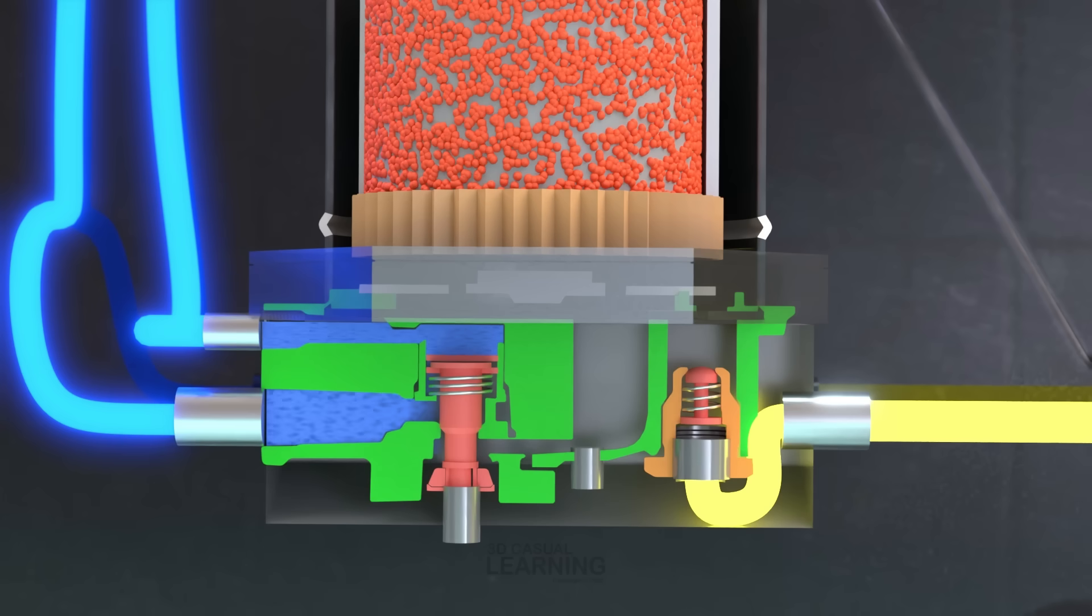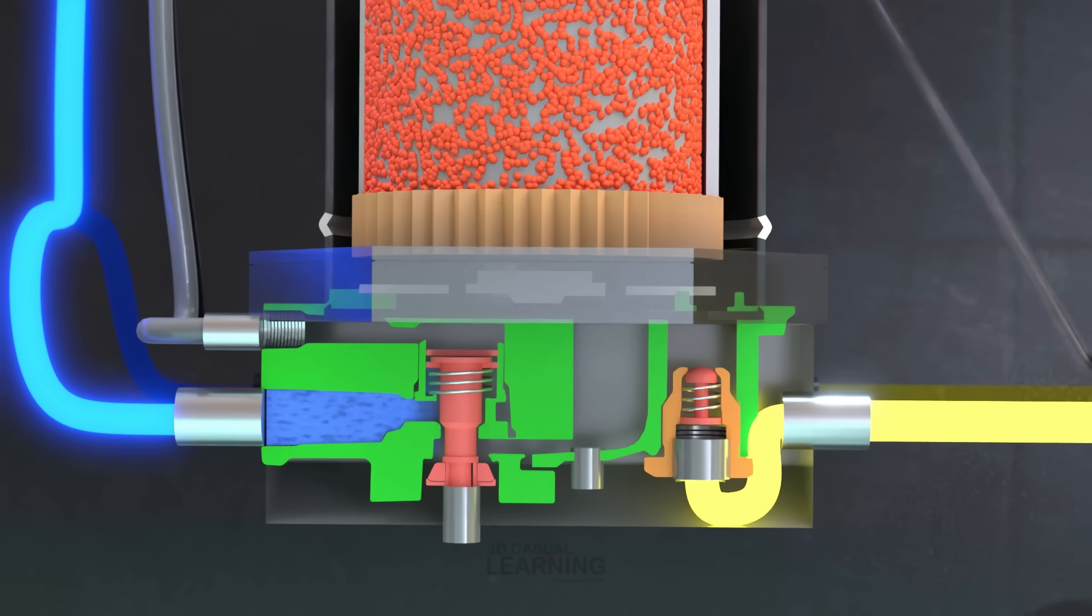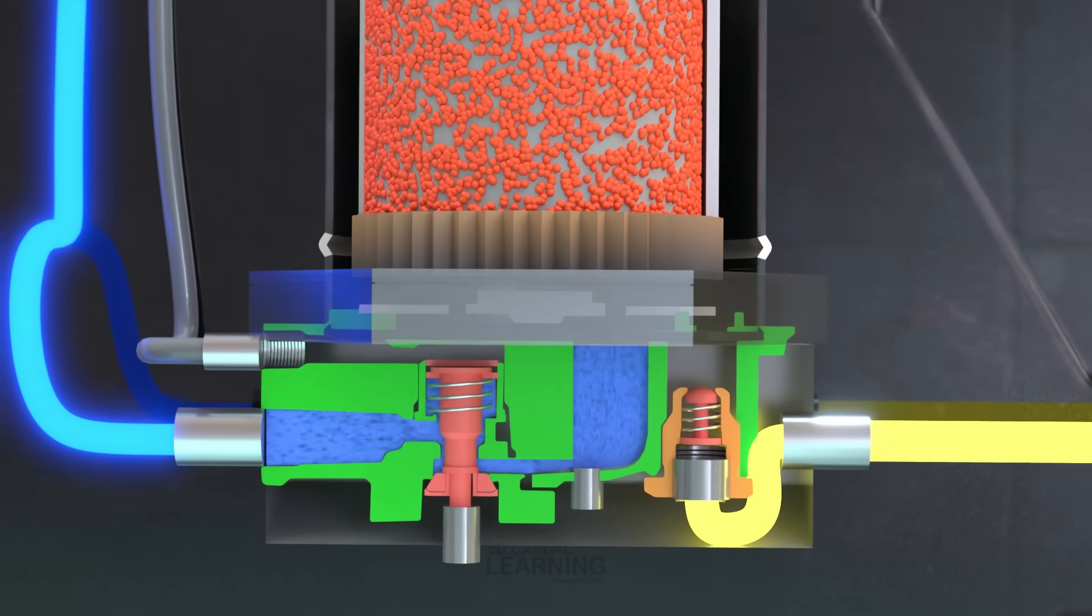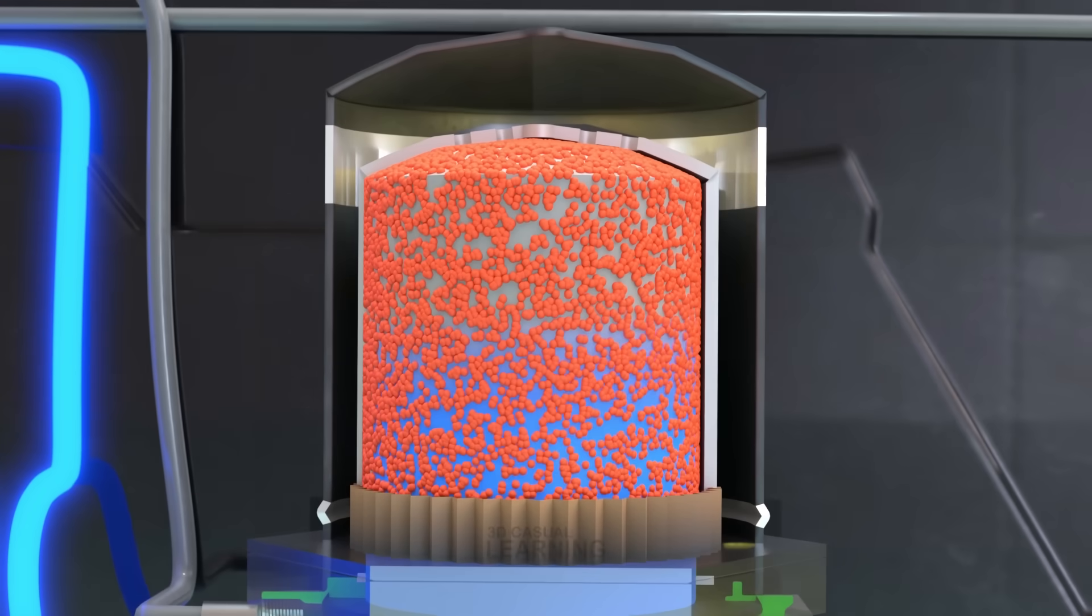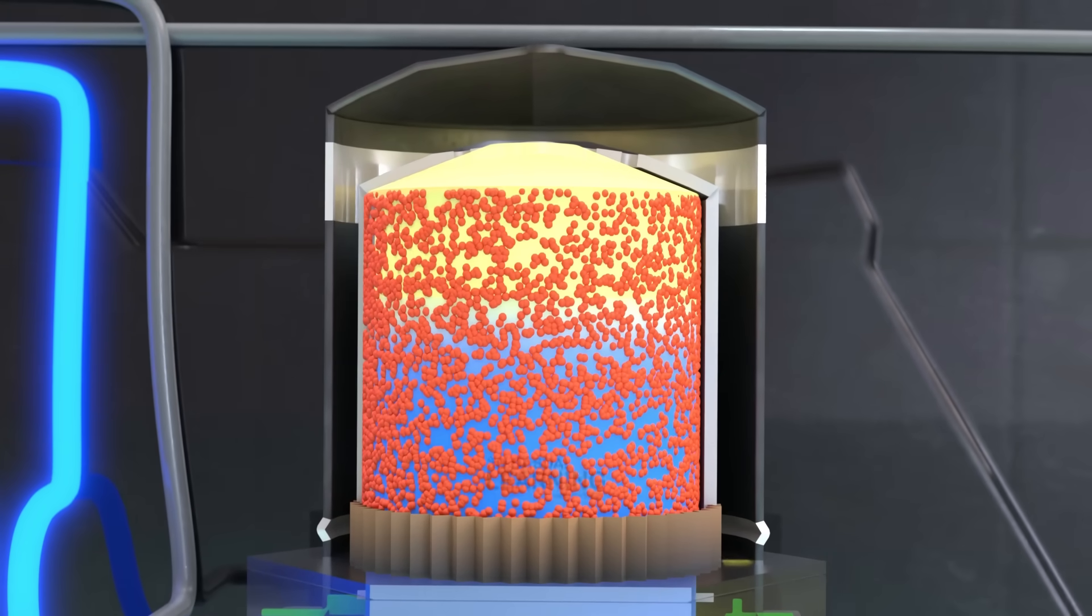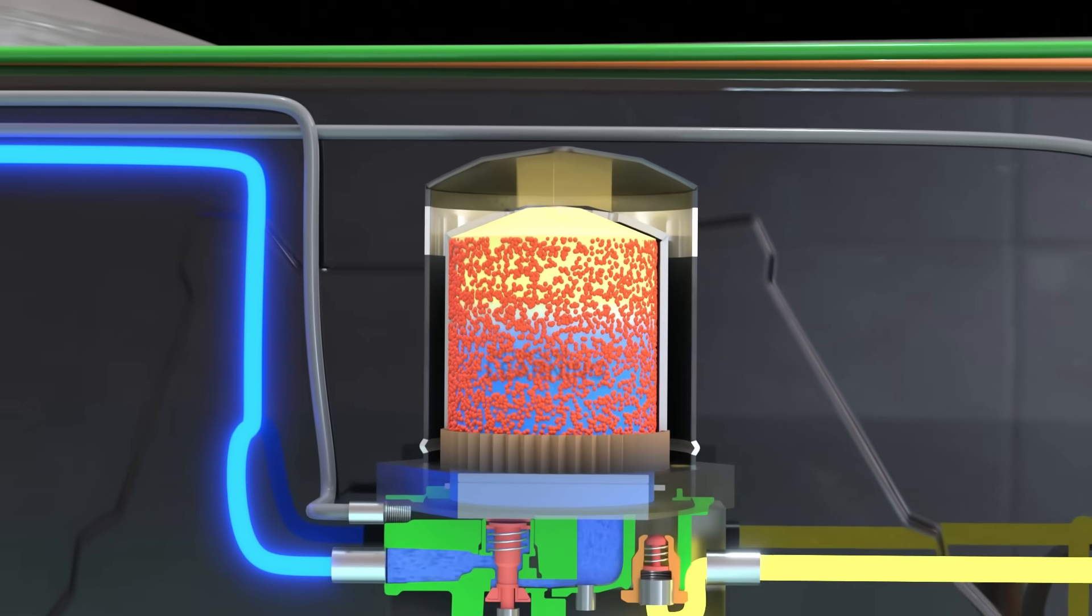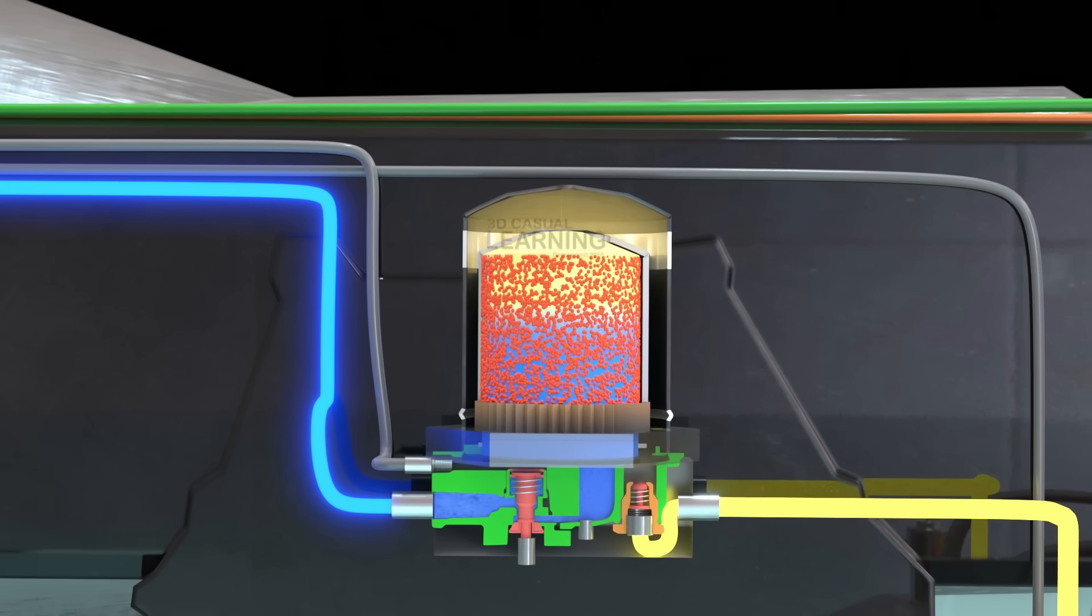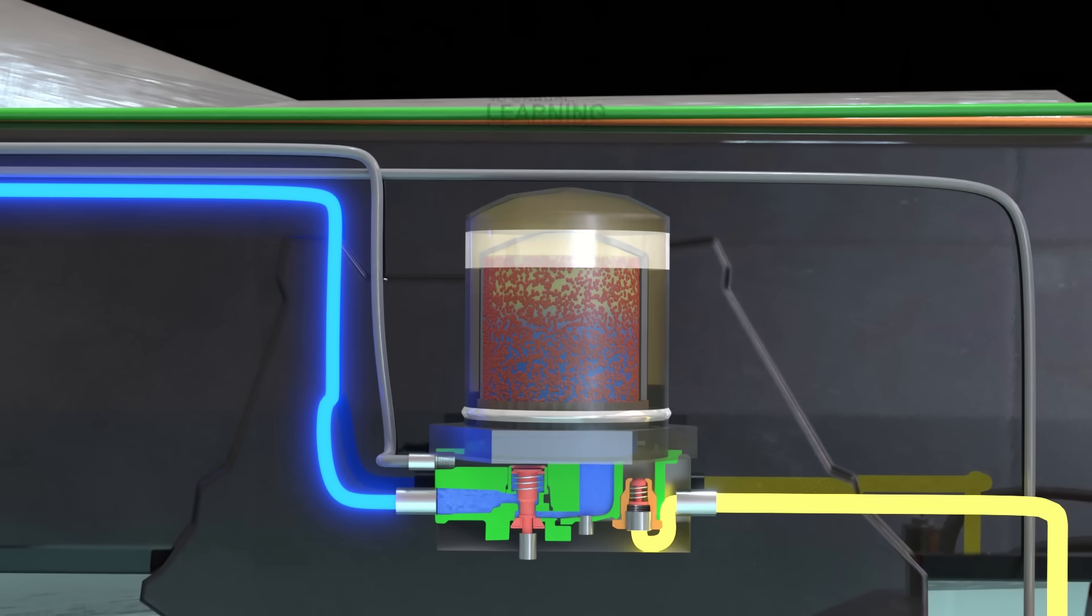When the air pressure drops below the governor's cut-in threshold, the governor vents air from both the compressor unloader and the air dryer's control port. With the control pressure removed, the purge piston is pushed back by its return spring, causing the purge valve to close. This action resets the air dryer, and the system transitions back into the charging cycle. This charge-purge sequence repeats continuously, maintaining a consistent supply of clean, dry air to the brake system at all times.